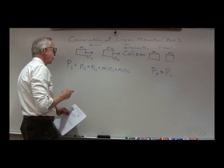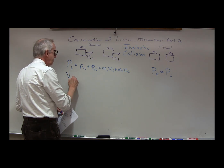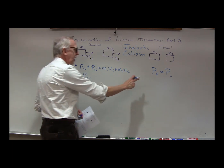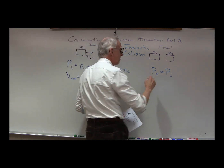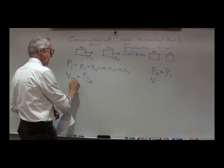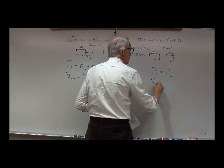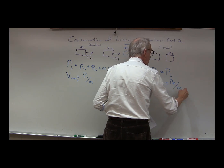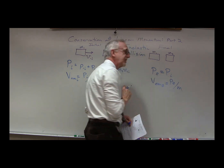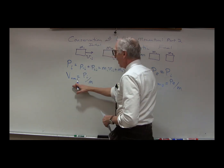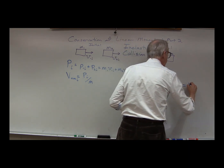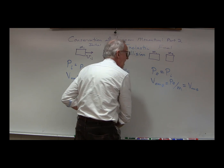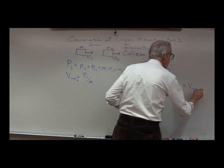What about the velocity of the center of mass? The velocity of the center of mass equals the total momentum divided by the total mass. The final velocity of the center of mass is p final over the total mass, but p final equals p initial, so the center of mass velocity is the same initially and finally — the center of mass maintains constant motion and does not change.